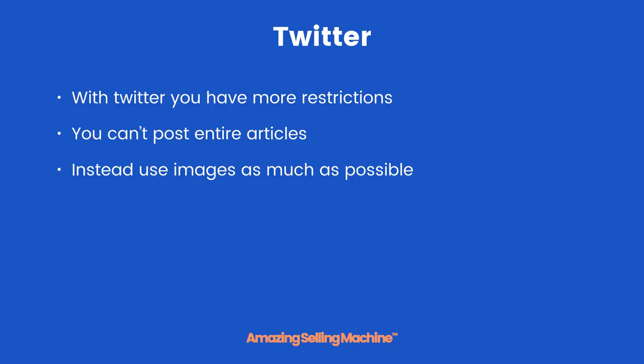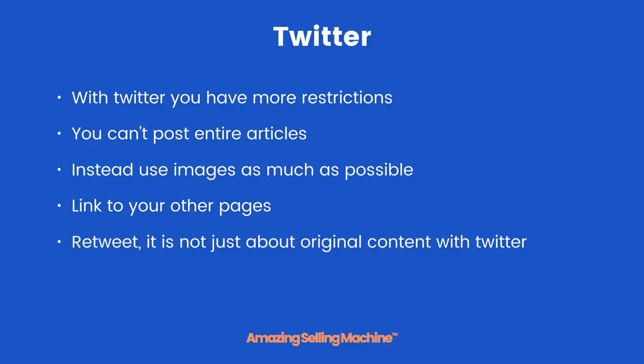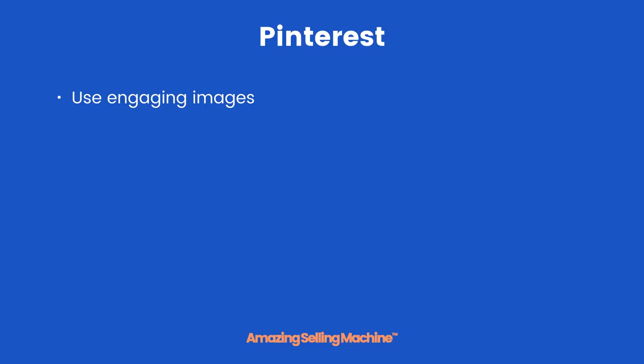With Twitter you have more restrictions — you can't post entire articles. Instead, use images as much as possible with a short piece of text and a link. Use links to your other pages — in other words to Facebook, Pinterest, YouTube, or even your website — and don't forget your Amazon listing too. You can also retweet; it is not just about original content. We use Twitter more to send traffic to our other pages and also to our Amazon listing.